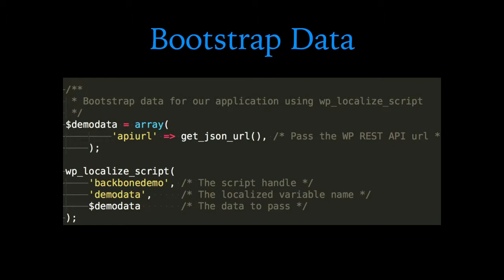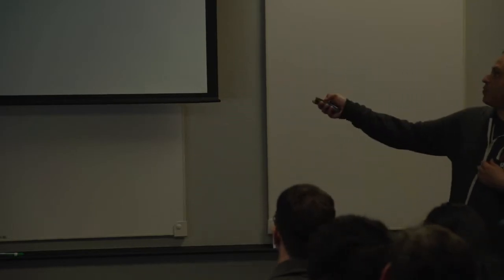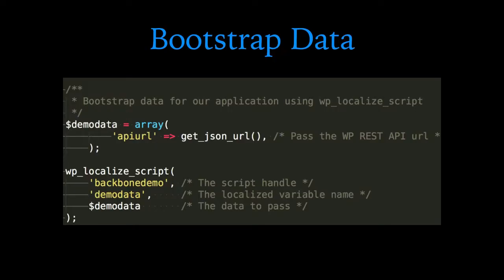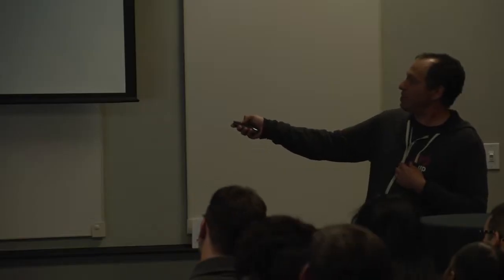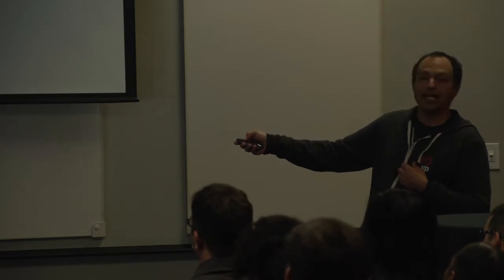We're going to bootstrap a little bit of data — but not much. All we really need to bootstrap is the URL of the JSON API, because our JavaScript application needs to know where to hit the JSON REST API to get its data about the post. I don't want to hard-code that in there. This was helpful since I recently updated the REST API and the endpoint changed — this continued to work because the function returned the new endpoint. So this is a way to get the correct endpoint, and I'm passing that data with WP localize script to the application.